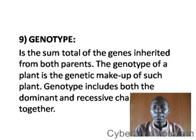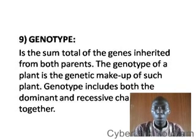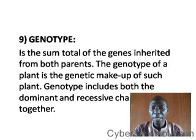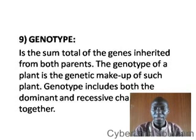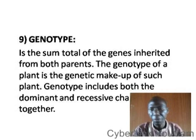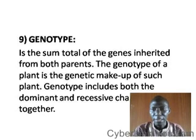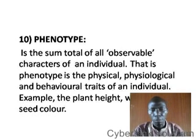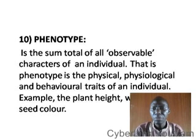Genotype is the sum total of the genes inherited from both parents. The genotype of a plant is the genetic makeup of such a plant. Genotype includes both the dominant and recessive characters together. An offspring has some characteristics from both parents — that is why we call it genotype.